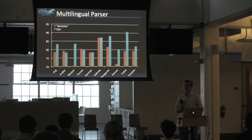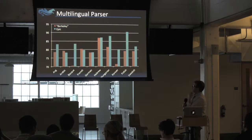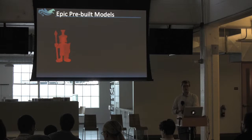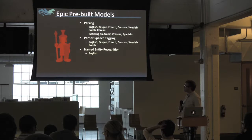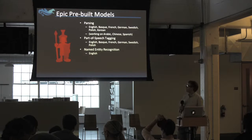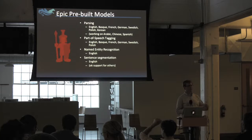Epic comes with a bunch of different models — parsing models for a bunch of different languages, as well as part-of-speech tagging models for most of these languages. We have named entity recognition for English that's relatively close to state-of-the-art. We also have sentence segmentation — we can break raw text into sentences — and tokenization, just like I showed earlier.